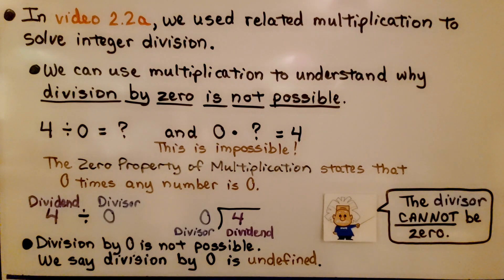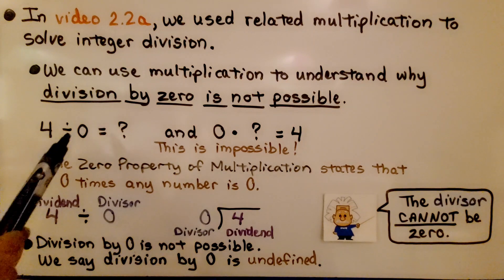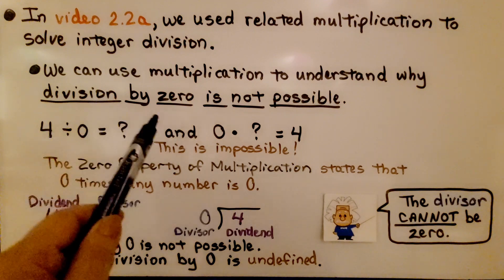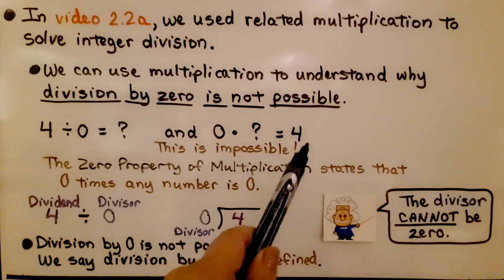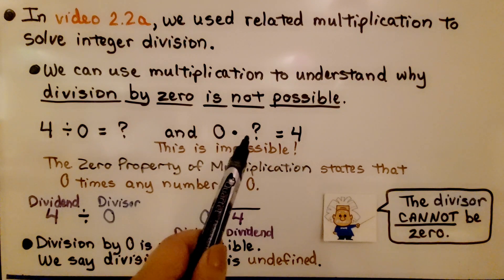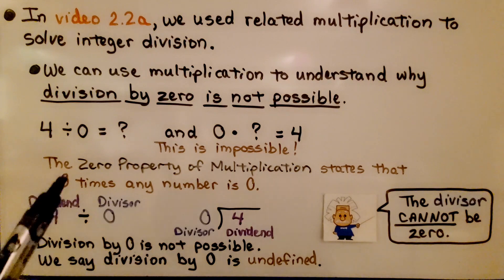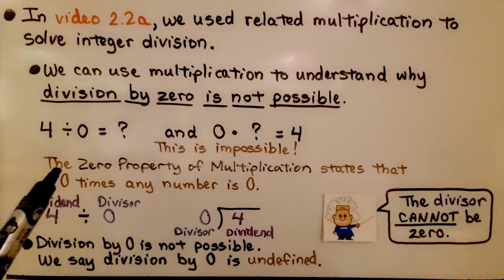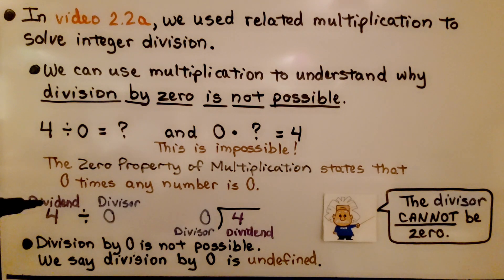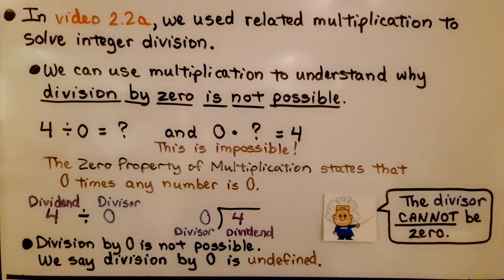In video 2.2a, we used related multiplication to solve integer division. We can use multiplication to understand why division by zero is not possible. We have four divided by zero. We write a related multiplication sentence: zero times some number is equal to four. But this is impossible — the zero property of multiplication states that zero times any number is zero. No matter what we put there, it will equal zero. So division by zero is not possible. We say division by zero is undefined.